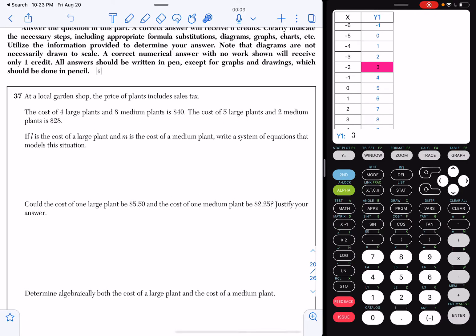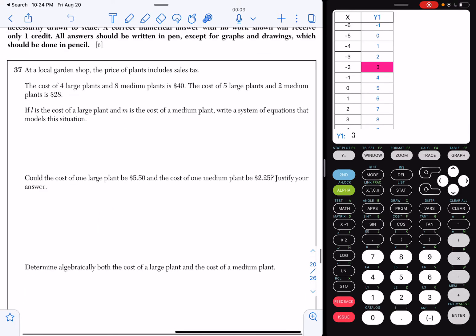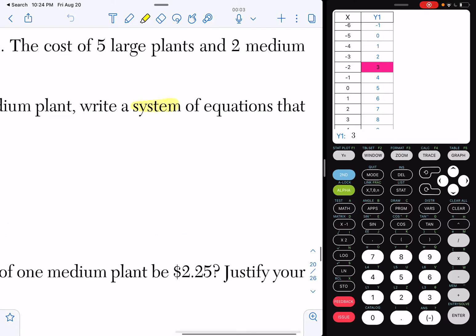As you can see, this question is broken up into one, two, and three parts. At some point, you will be solving this system. If L is the cost of a large plant and M is the cost of a medium plant, write a system of equations that models this situation. So you see how I have a systems of equations? That means you're going to be writing two equations. So there better be two equations on your page.